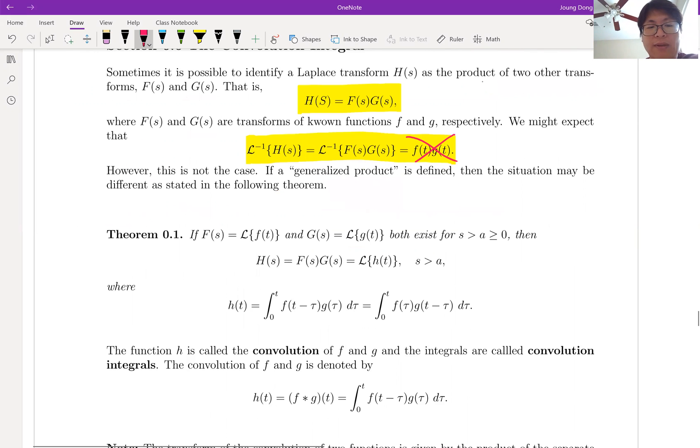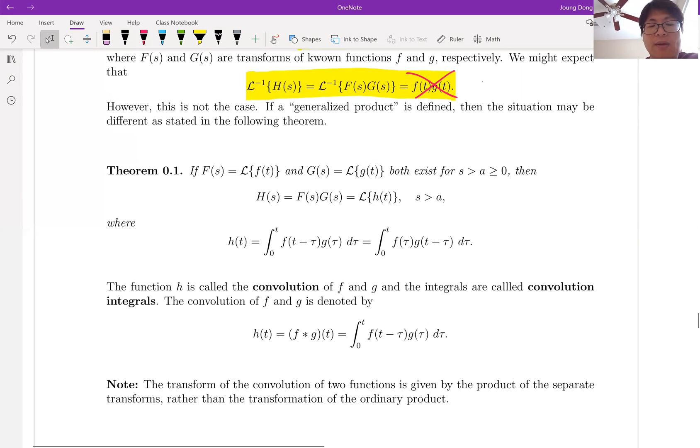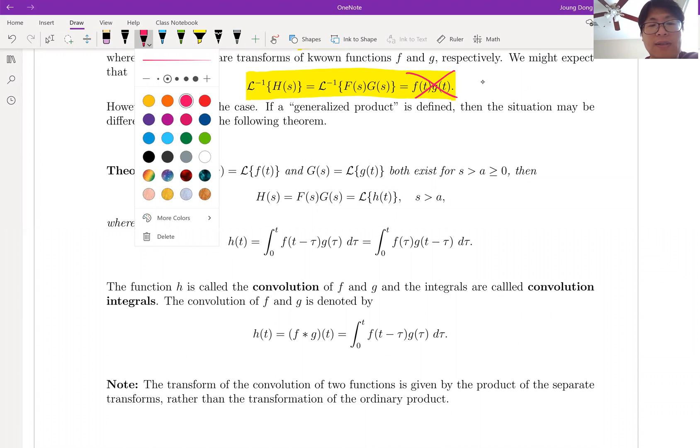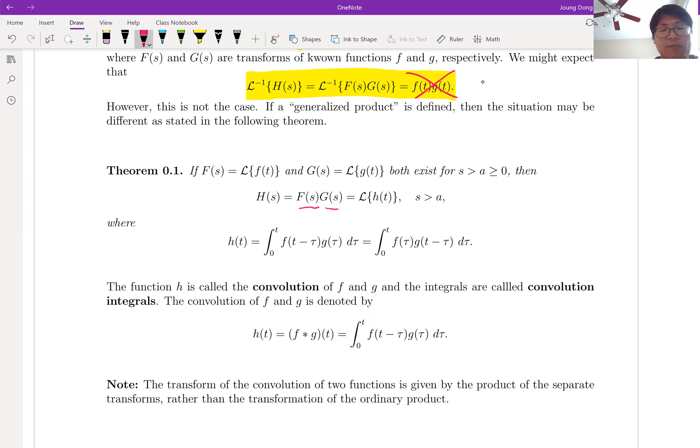Look at theorem number one. If your H is the product form of F and G, then we can write your inverse Laplace transform as this little bit complicated integral. That's why we're going to say this integral as convolution integral. And we're going to say this H is convolution.